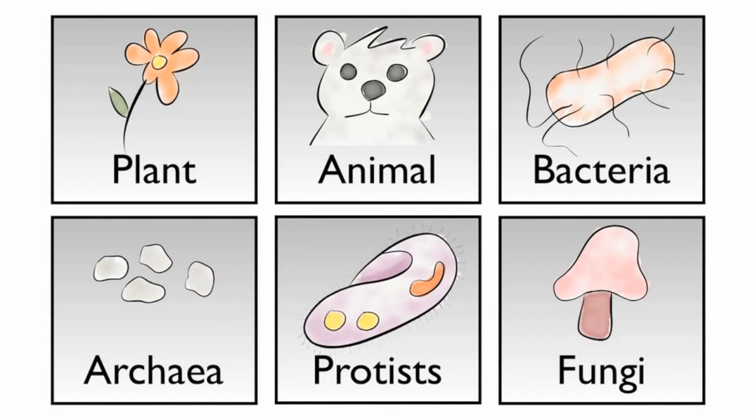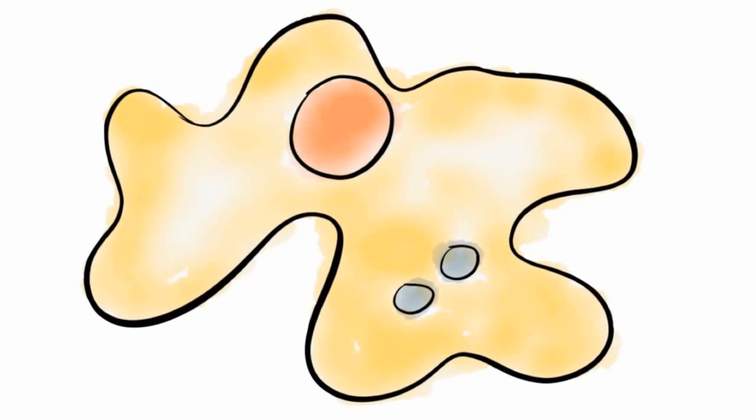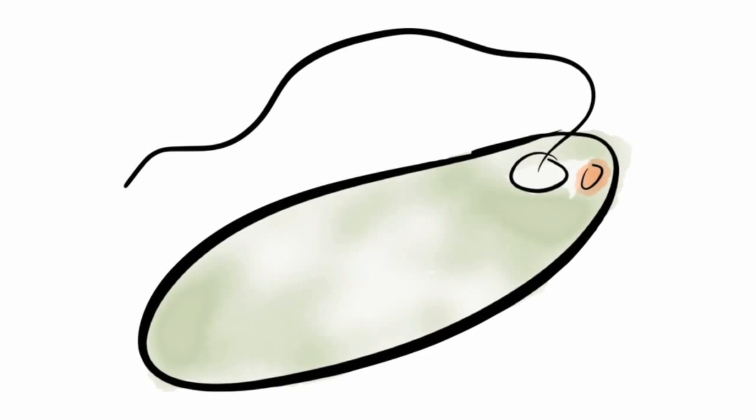The next group are called protists. These organisms are microscopic and can be found in pond water. Some examples are paramecium, amoebas, and euglenas.